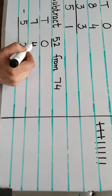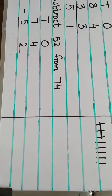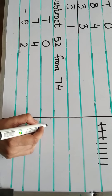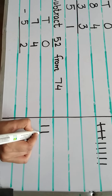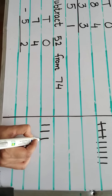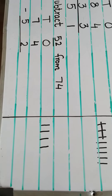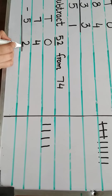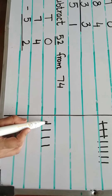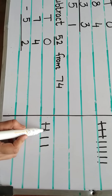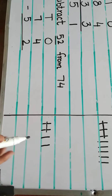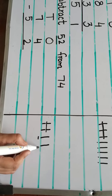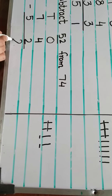The number in the ones column is 4. From 4 we will separate 2. Draw 4 lines here: 1, 2, 3, 4. How many do we have to separate? 2. Cut: 1, 2. Count the lines left: 1, 2. Write 2 there.